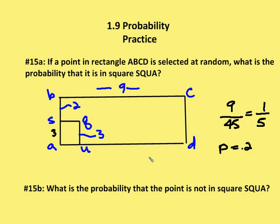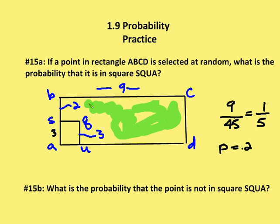The next question is: what is the probability that the point is NOT in SQUA? That means everything else outside of SQUA. Well, it's going to be 4 fifths, because the square is 1 fifth of the entire rectangle, so the balance of the rectangle — the remaining region — is 4 fifths. The probability that the point is not in SQUA is 4/5, or 0.8.